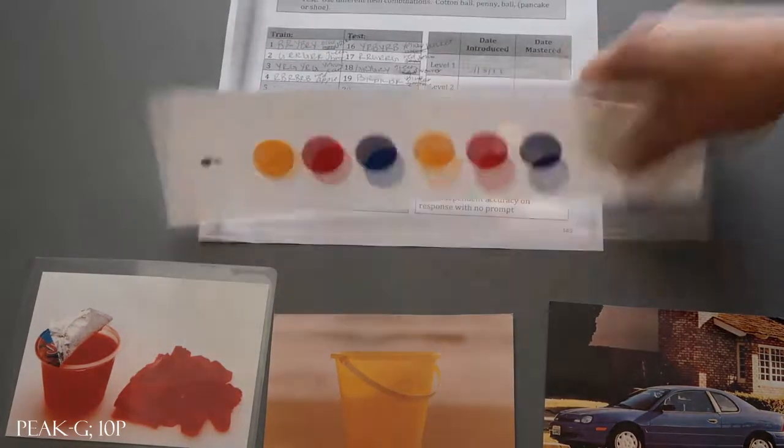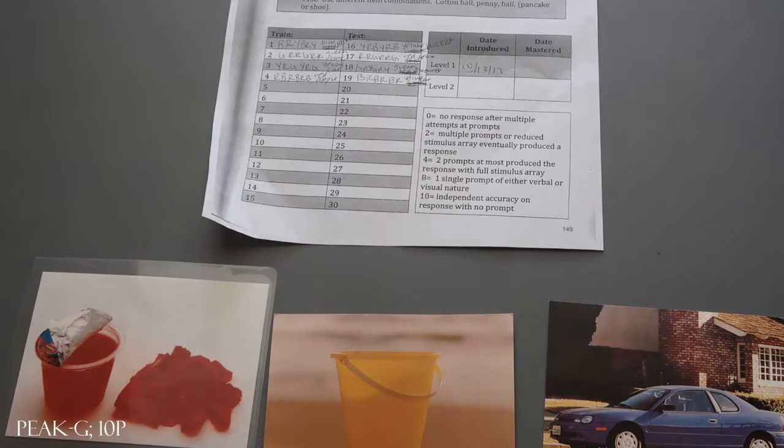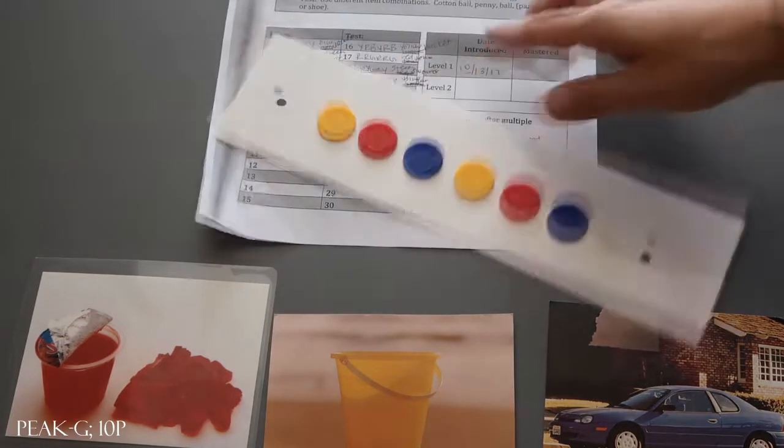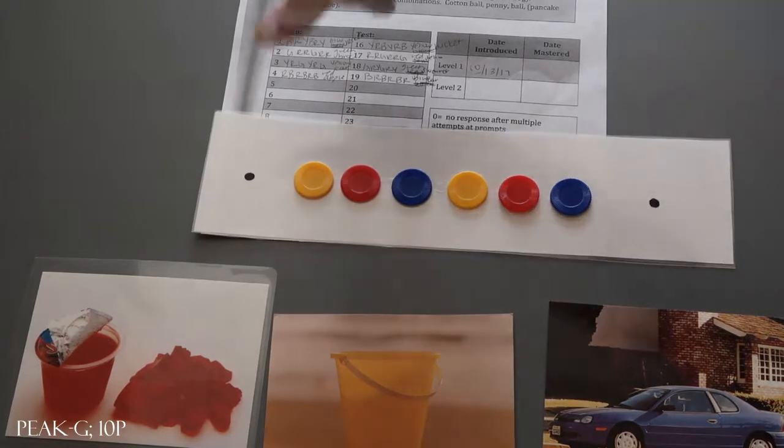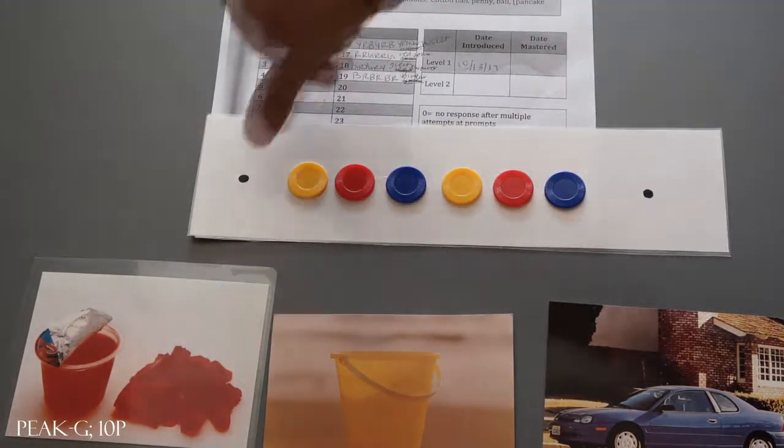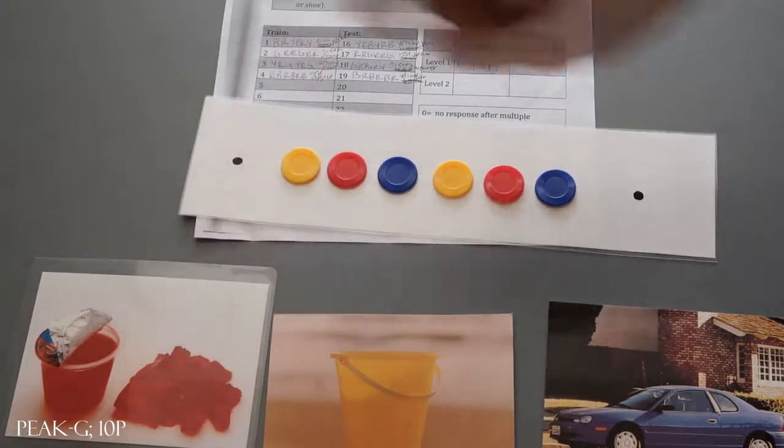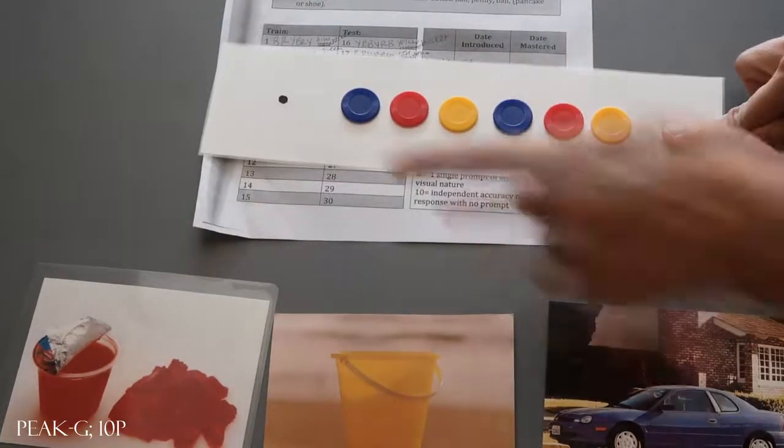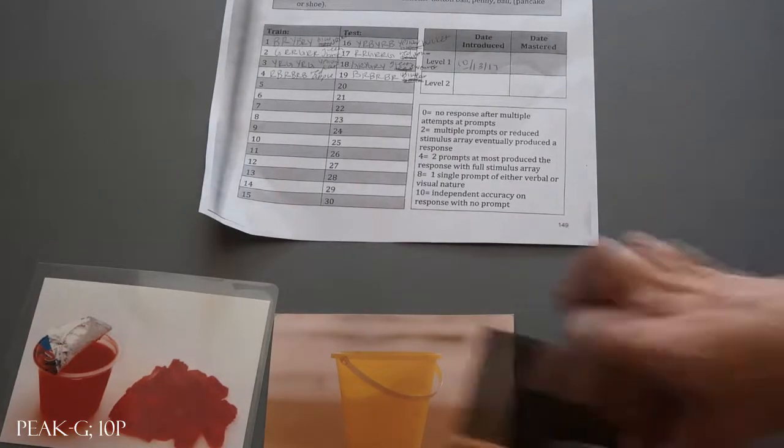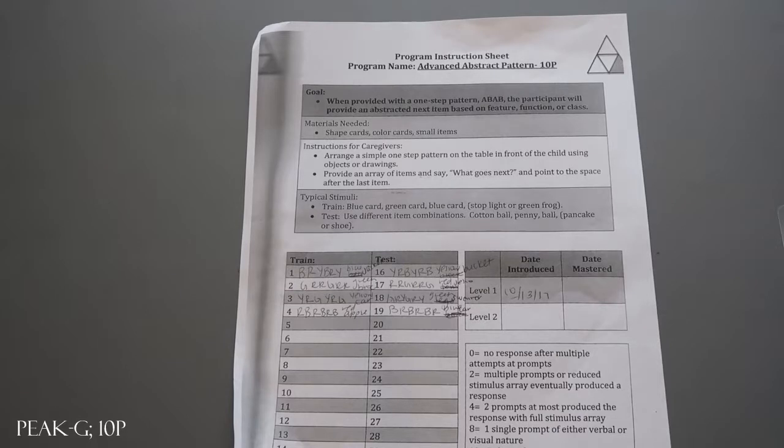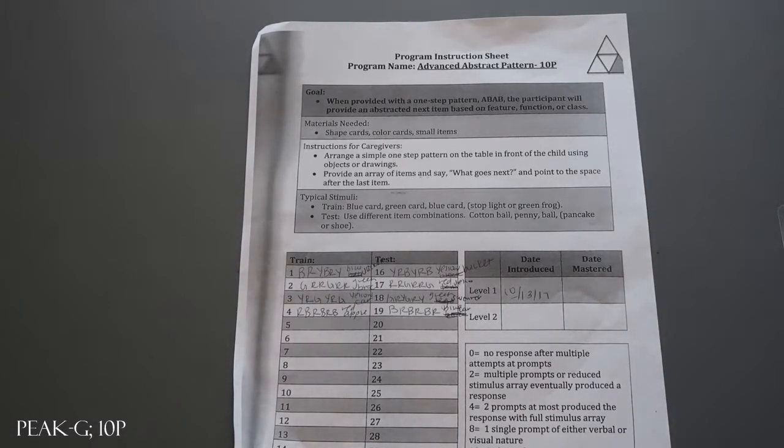They would just put it up there and then I would take it away and say okay let's do another one and then keep going from there. We made all of these reversible just to have less materials to worry about. Both dots are on each side so that you can just cover one and have them put what's next and then flip it back and forth. So you have two for one in some of these materials. That just gives you a quick idea of what you might use for this program for Peak Generalization Advanced Abstract Pattern 10P.